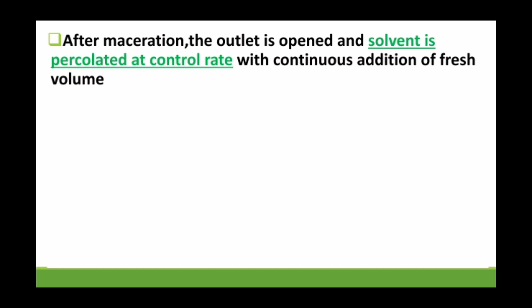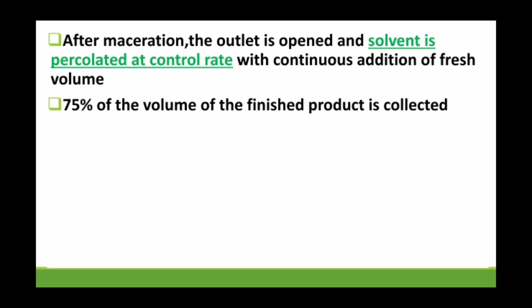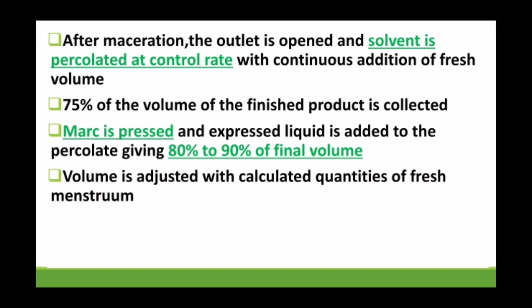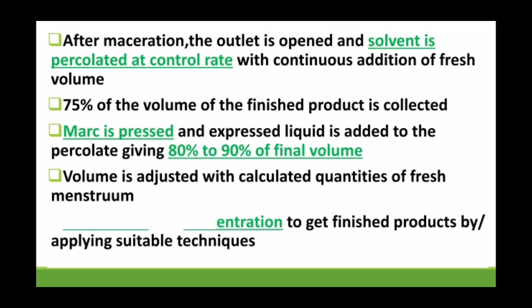After maceration we open the outlet and the solvent percolates at a controlled rate. We add a fresh volume of menstruum. The finished product represents 75% of the total volume. We collect it in a beaker or container and press the mark — the inert material — so the remaining liquid extract comes out, collecting 80–90% of the final volume of liquid extract. The final volume is adjusted with calculated quantities of fresh menstruum, then we evaporate and concentrate to get the final finished product.